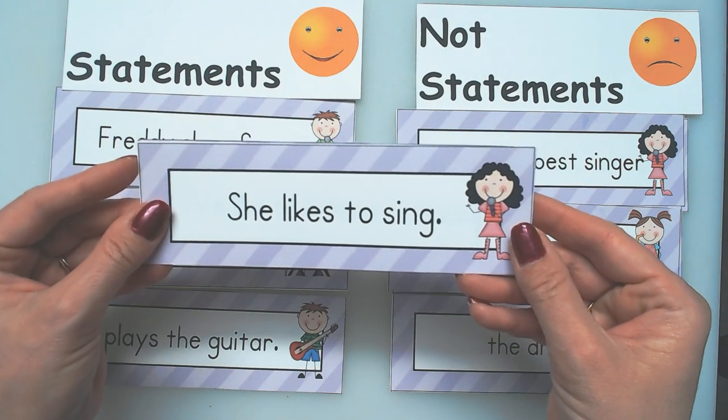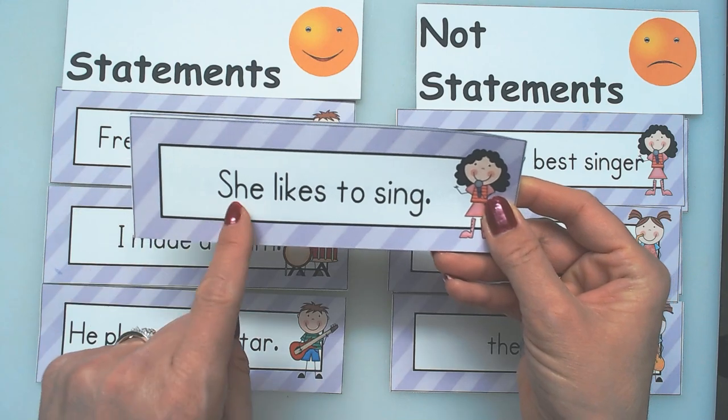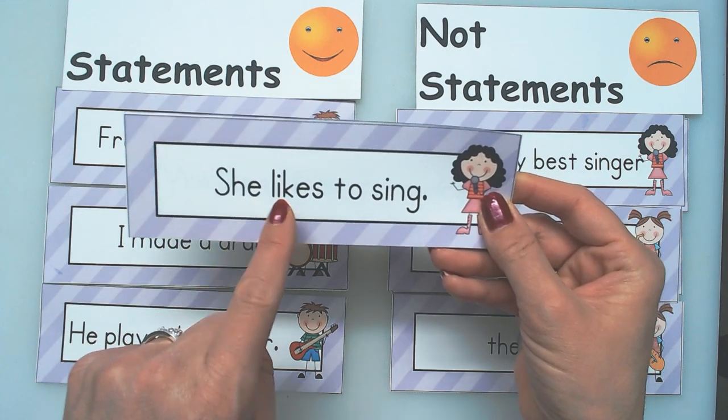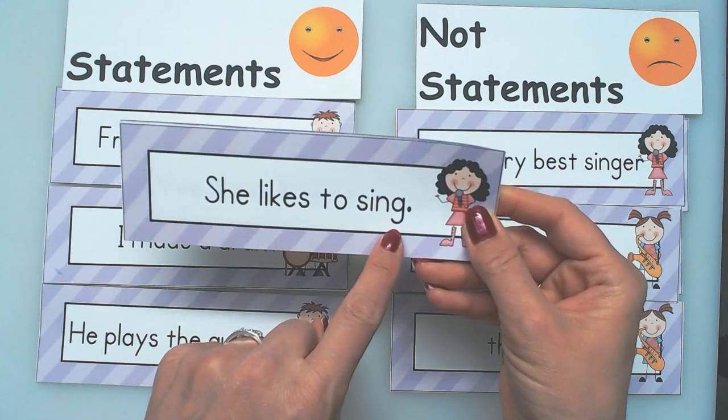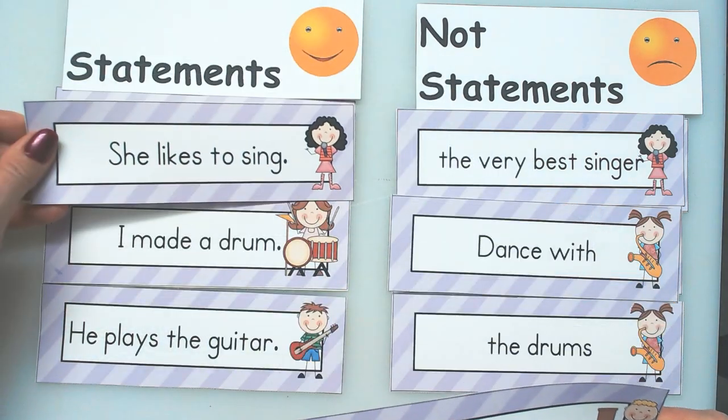She likes to sing. She likes to sing. It's a statement because she, that's who it is. Likes to sing, it's what she does. It ends with a period. It starts with a capital letter. It followed all the rules.